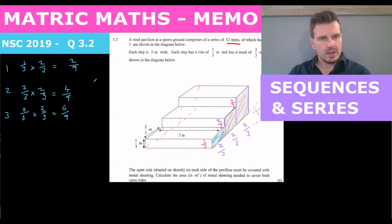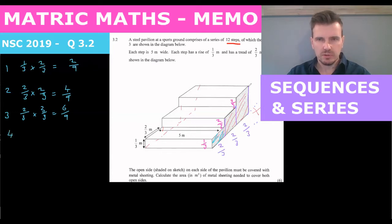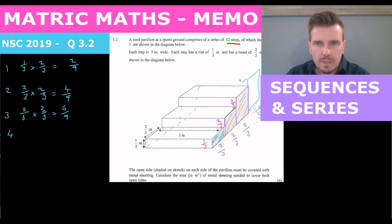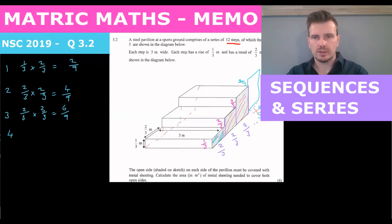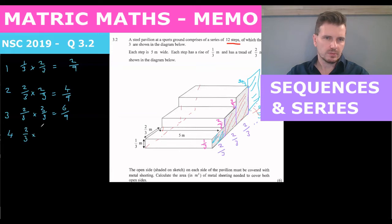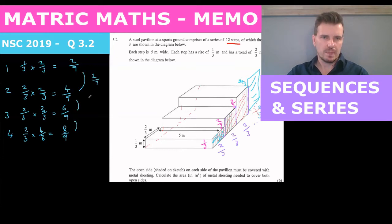So what do we have? We've got what looks like an arithmetic sequence where we're adding two ninths each time. Let's just double check that. The fourth one would still be two thirds wide, and the rise would be four thirds. So this whole thing is four thirds times two thirds, which is eight over nine. Yes, we definitely have a common difference of two over nine, so we are looking at an arithmetic sequence.